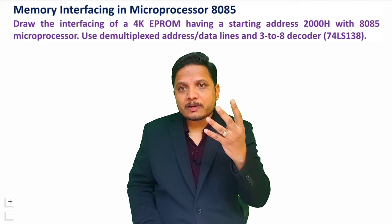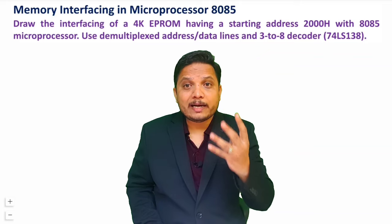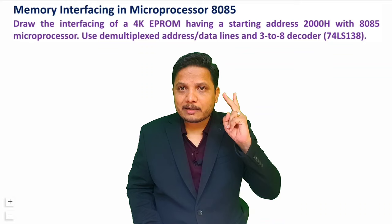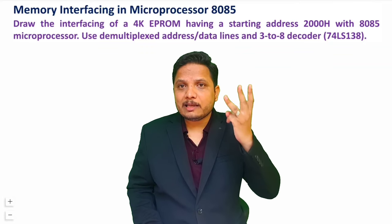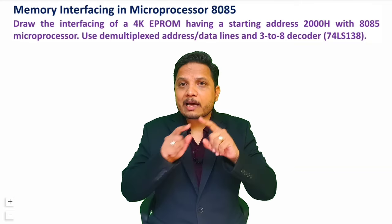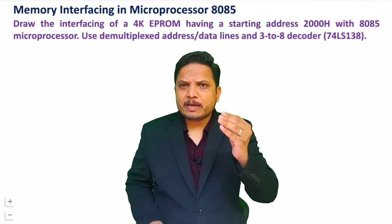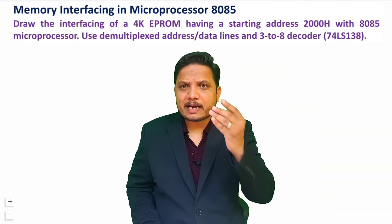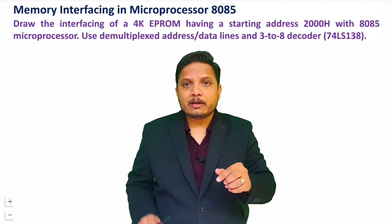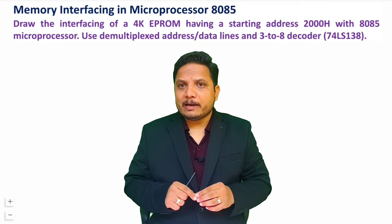So there are basically four types of signals to identify for memory interfacing: address line, data line, control signal, and chip select. I will explain the entire process, and there will be at least three or four examples on this platform so that you will be able to answer any question regarding memory interfacing.